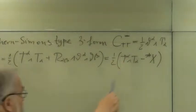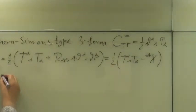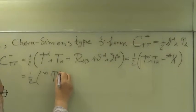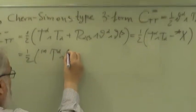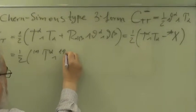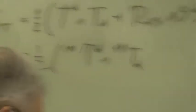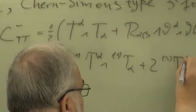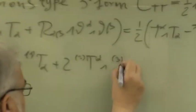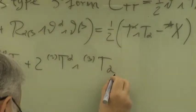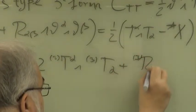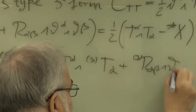So you can rewrite this. It's one-half T-alpha wedge T-alpha minus the Hodge dual of X, where X is the pseudo-scalar we defined before. And this decomposes in three pieces: one-half of T1-alpha wedge T1-alpha, plus T2-alpha wedge T3-alpha, plus the X term which is R3-alpha-beta wedge theta-alpha wedge theta-beta.